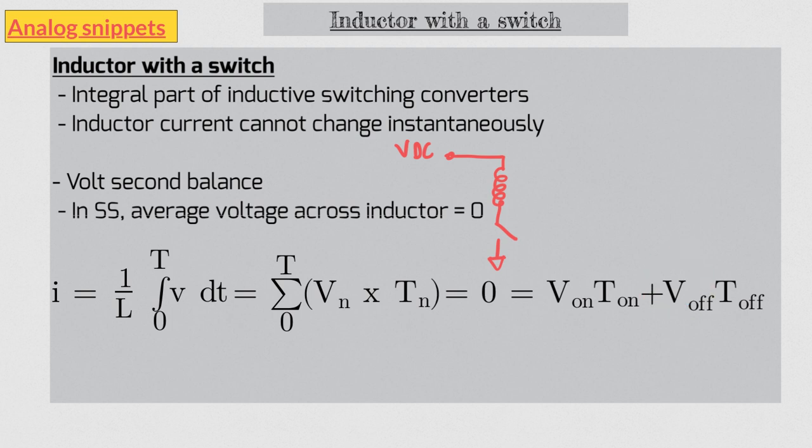So if the voltage across inductor is positive in t on cycle it must be negative in t off cycle. In other words polarity across inductor reverses.